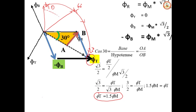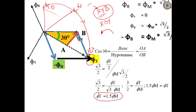The direction of rotation depends on the phase sequence. With phase sequence R-Y-B, the rotating magnetic field rotates in the clockwise direction. If the phase sequence is changed to R-B-Y, the RMF will rotate in the anticlockwise direction. A separate video will be posted on phase sequence.